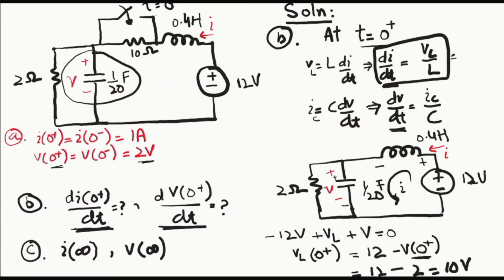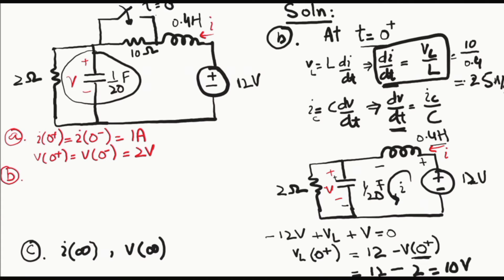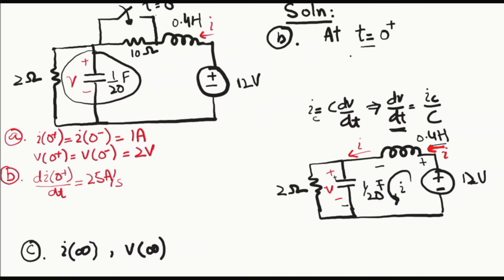Putting the values: VL = 10 volts and inductance L = 0.4 henries. Therefore, di/dt at t equals zero positive equals 10 / 0.4 = 25 amperes per second. Now the inductor current arrives at a node and divides into the capacitor branch and the resistor branch.